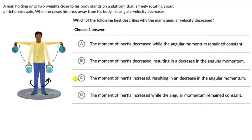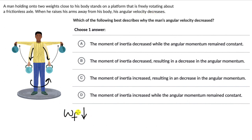So this person is holding two weights and is standing on a platform that is rotating — it could be rotating anti-clockwise or clockwise, that doesn't really matter. Initially his hands are close to his body, then he raises his hands and makes them horizontal, and as a result the final angular velocity of the platform decreased. So the final angular velocity is less than the initial angular velocity.